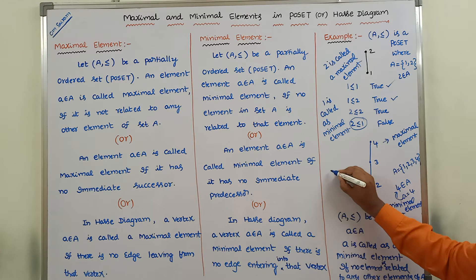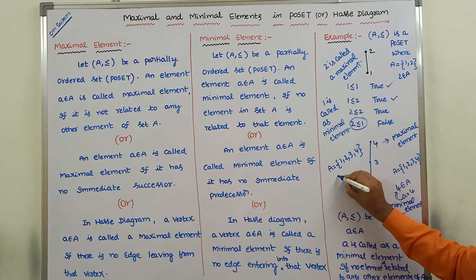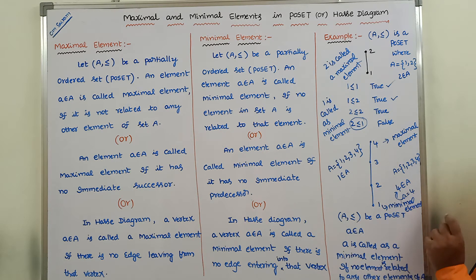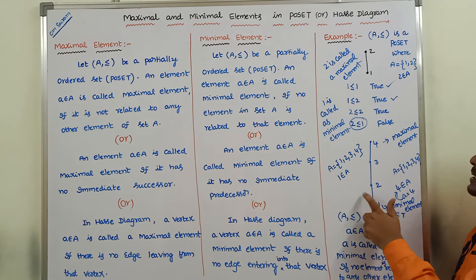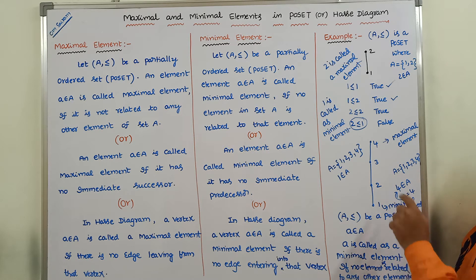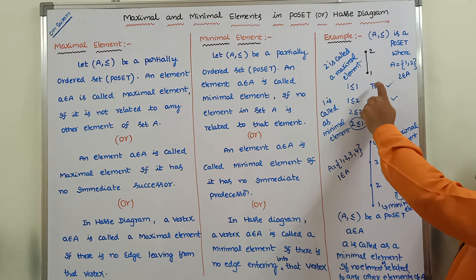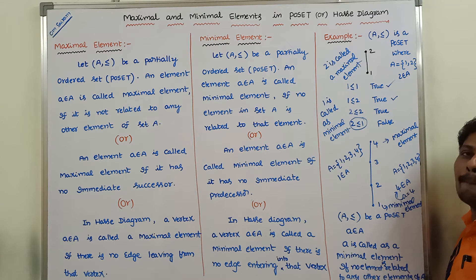Here, A = {1, 2, 3, 4}, and 1 belongs to A. So, 1 is called a minimal element. No element in set A is related with element 1 — 2 does not relate with 1, 3 does not relate with 1, 4 does not relate with 1. Hence, we can say that 1 is called a minimal element.